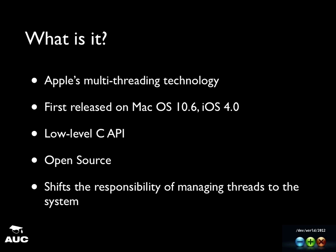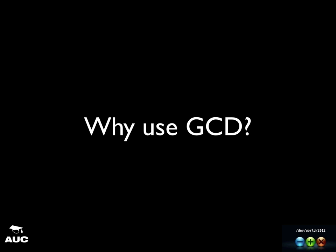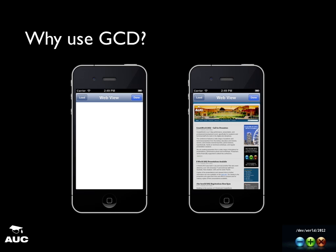So why would you want to use Grand Central Dispatch? Basically, there's just a web view in here, and when you press the load button, it loads the AUC web page, but it doesn't really give you any indication it's doing it. A lot of the time you'll do these things and it'll block the view, especially on iOS. If you block the main thread, your user interaction stops completely — if you try to touch the screen, nothing happens. On macOS, you'll get the spinning wheel.